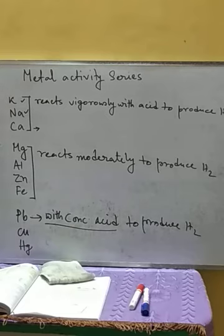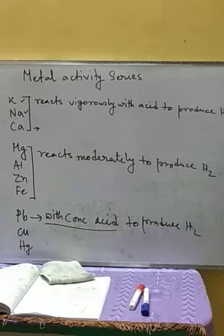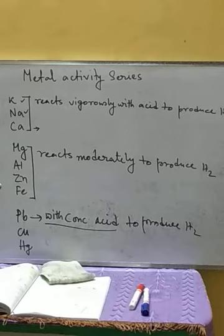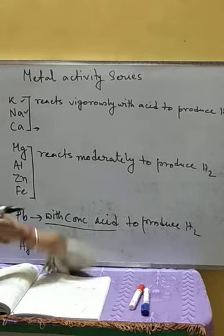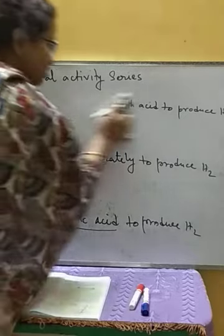So to summarize: potassium, sodium, and calcium react vigorously with acid to produce hydrogen. Whereas magnesium, zinc, and iron react moderately with acid to produce hydrogen. Lead reacts with concentrated acid to produce hydrogen. But copper and mercury do not react with dilute acid. And silver, gold, and platinum don't react with dilute acid either. This was the comparison of the metals in the activity series regarding their reaction with acid.